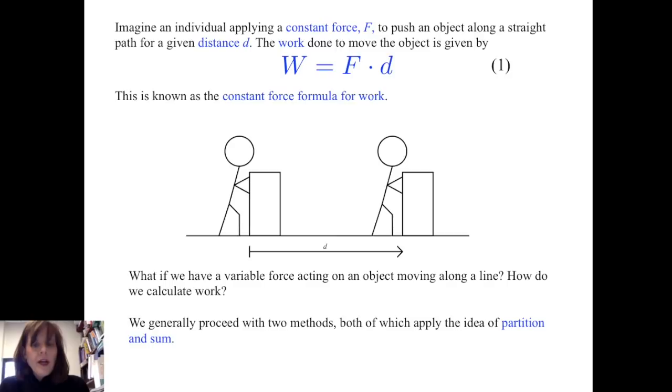What if we have a variable force acting on an object moving along a line? How do we then calculate the work? We generally proceed with two methods, both of which apply the idea of partition and sum that we've seen throughout this chapter.